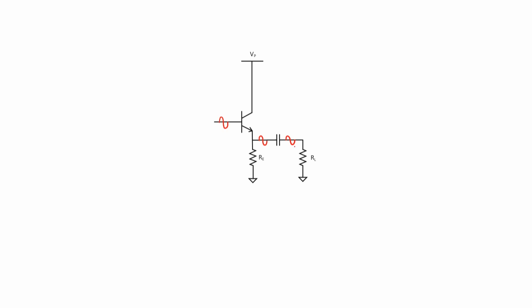So the output signal is roughly at the same AC voltage levels as the input signal. Let's talk about the current flow in this circuit, starting with DC current. We're going to have a DC current — I'll call this the collector current that flows down through that transistor. There's going to be a little bit of base current, but I'll neglect that. The DC current IC mostly flows through the emitter, so let's label that IC as well. Because it's DC, none of it goes over to the load resistor.